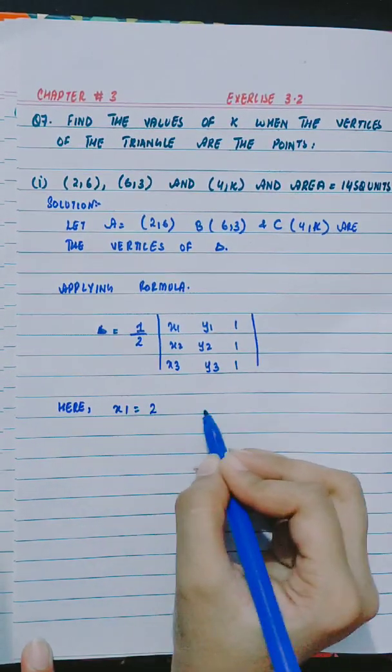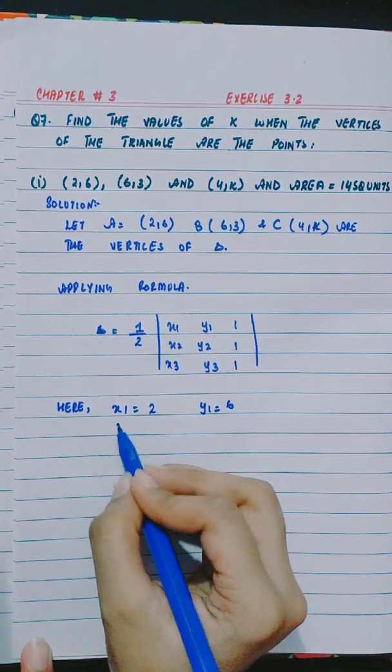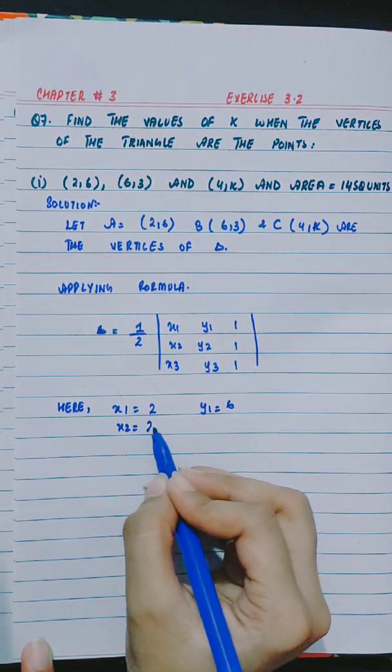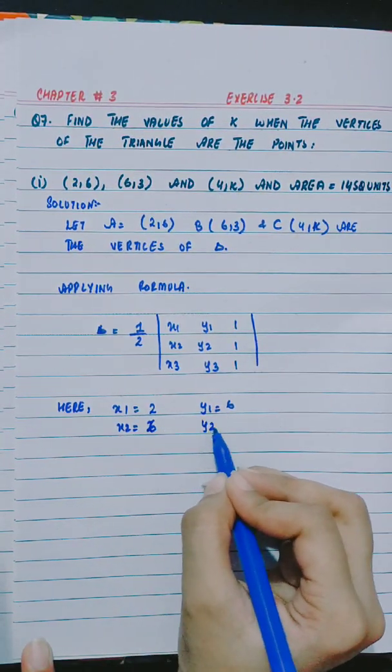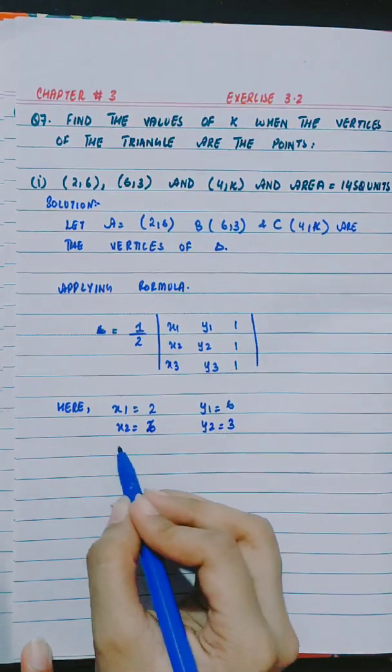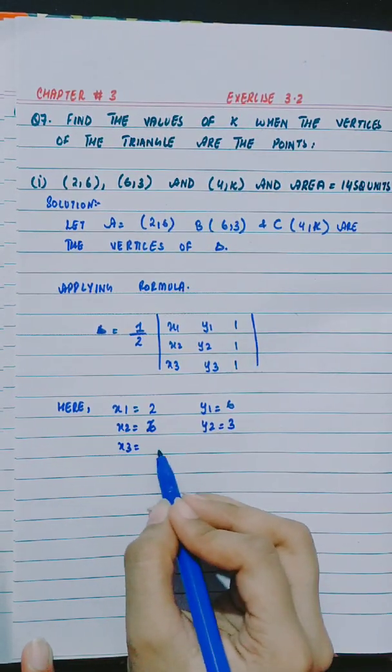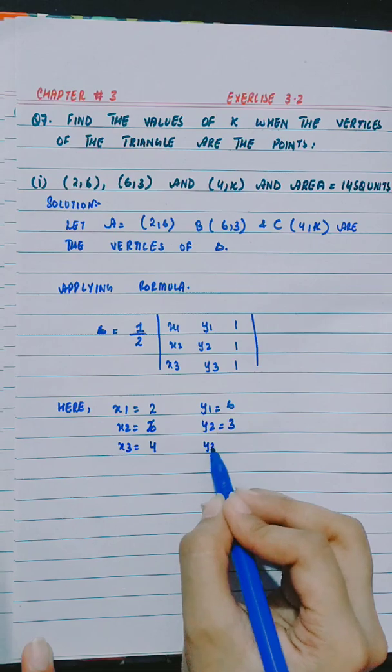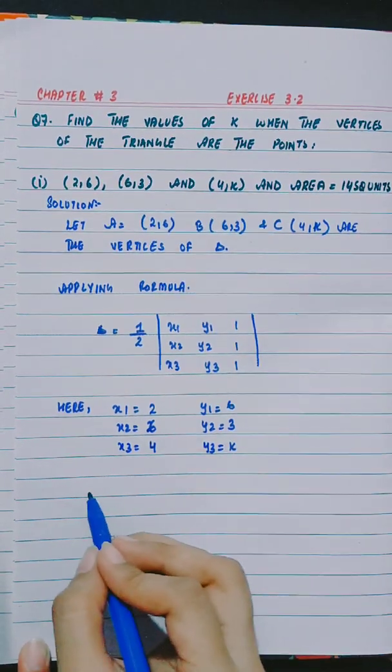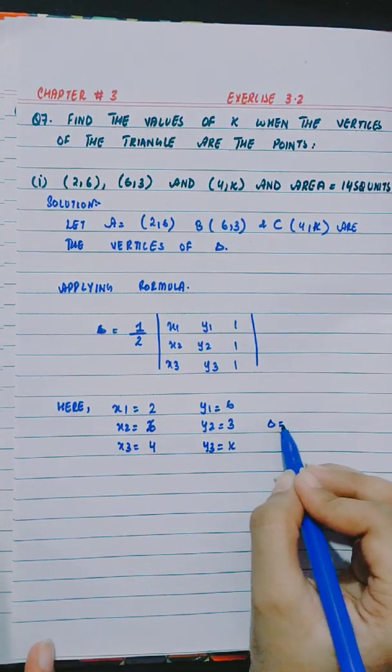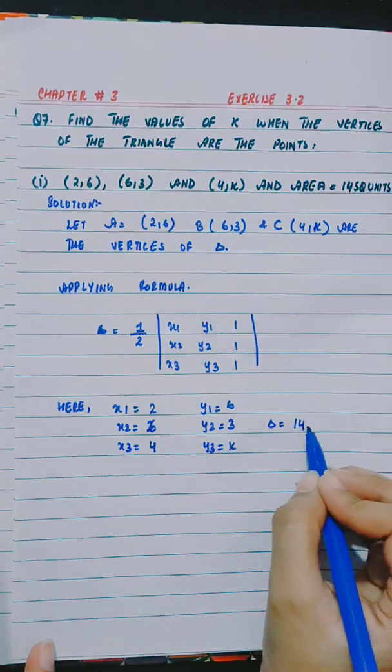Here x1 is 2, y1 is 6, x2 is 6, y2 is 3, x3 is 4, and y3 is k, and area is equal to 14.